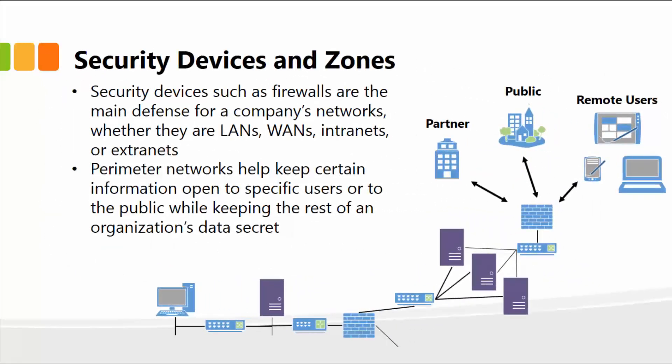Security devices and zones — you can create section zones and then deploy firewalls accordingly, so there may be multiple firewalls on your network. Security devices such as firewalls are the main defense for your company's network, whether they are LAN, wide area networks, intranets, or extranets. The perimeter networks help keep certain information open to specific users or to the public while keeping the rest of the organization's data secret. You can configure the firewall to only accept data from a trusted or allowed source.